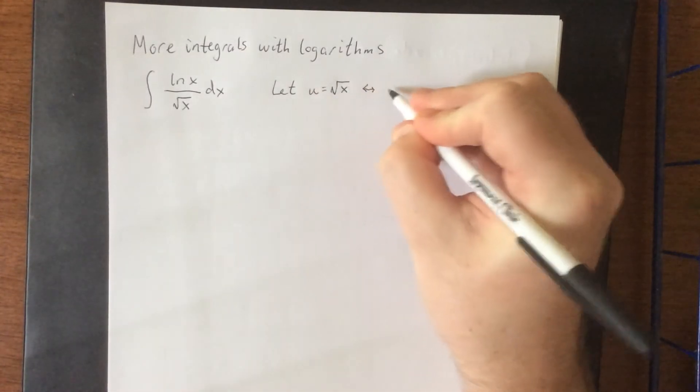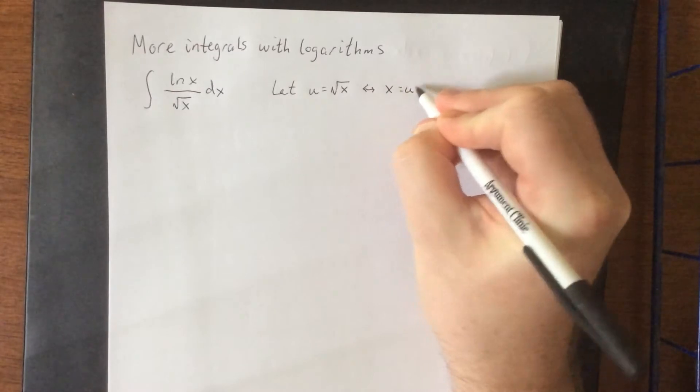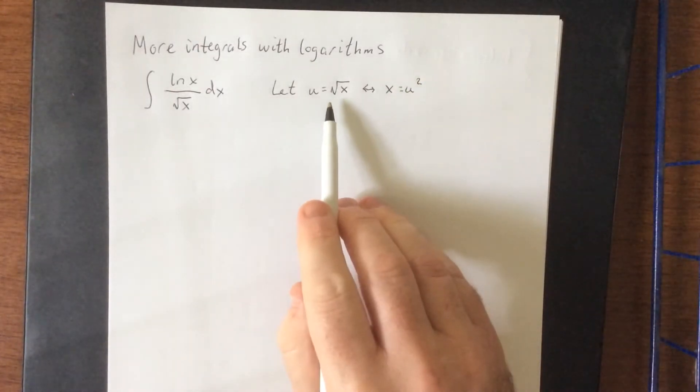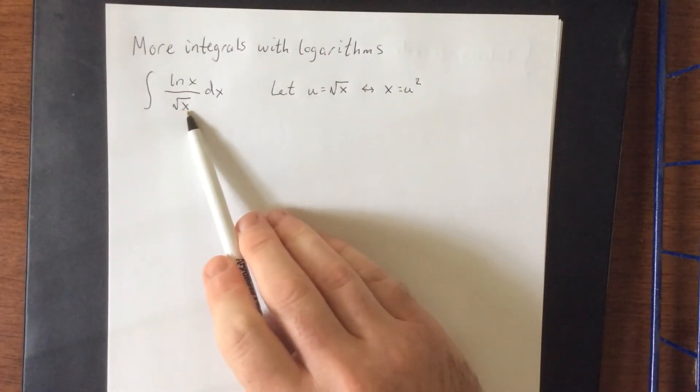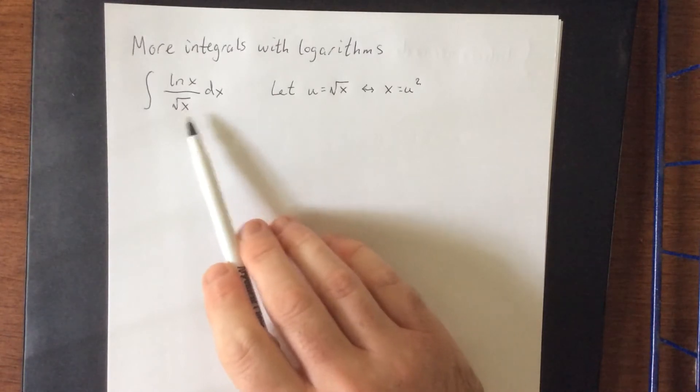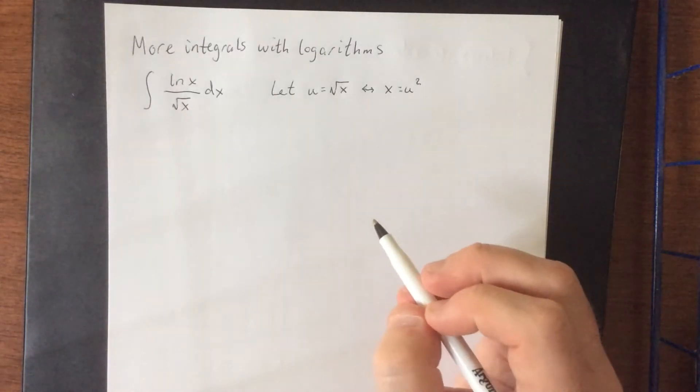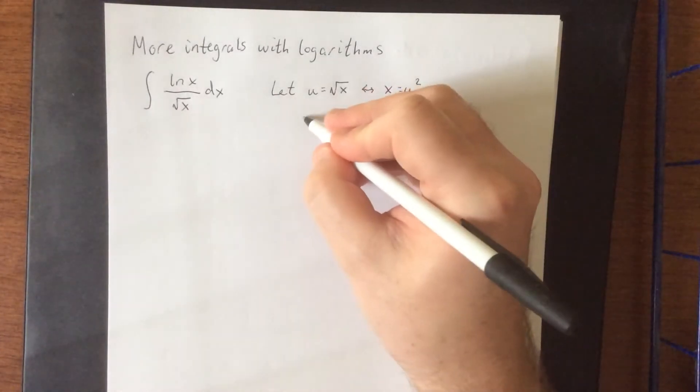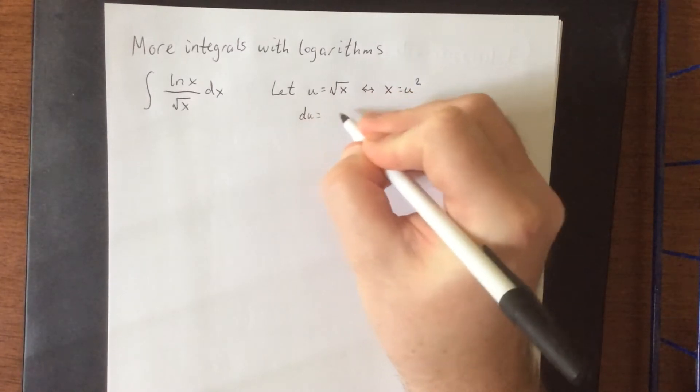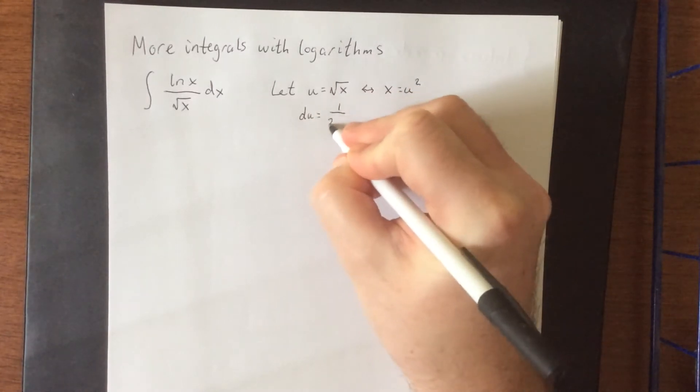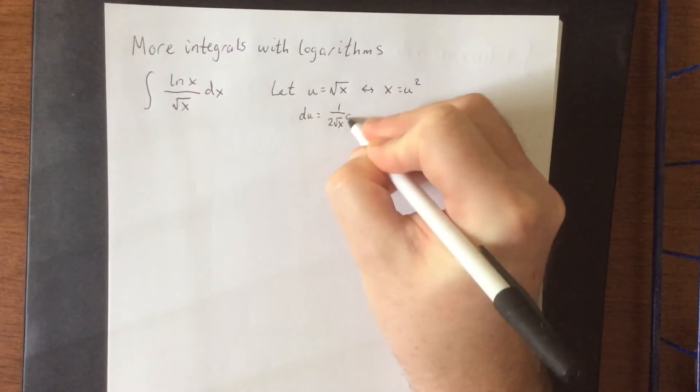Or if you wanted to go equivalently, you could say that x is equal to u squared. This is usually a substitution that's pretty good at getting rid of rogue square roots that you have around. Now, one mentality to get into is we could treat this as x to the 1 half power and say that du is equal to 1 over 2 square roots of x dx.